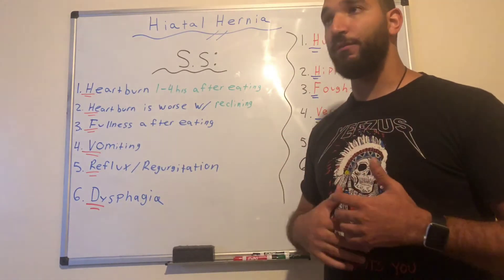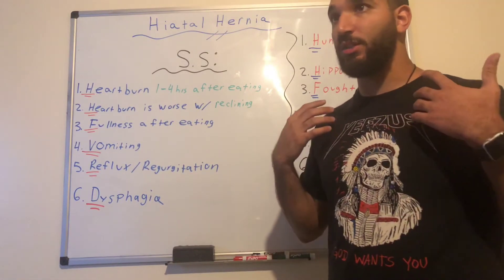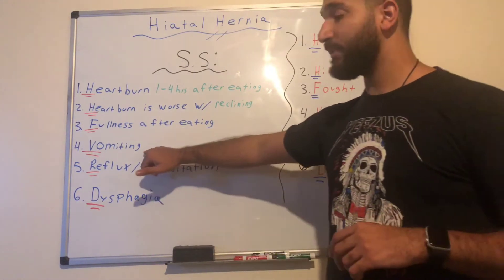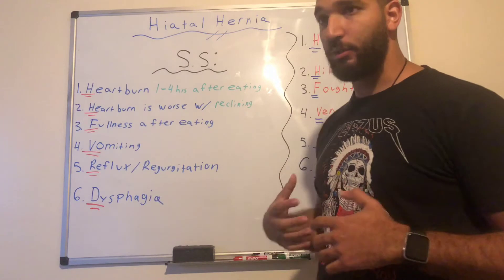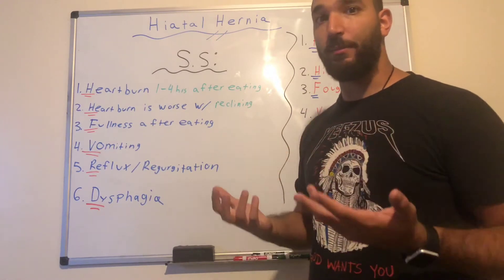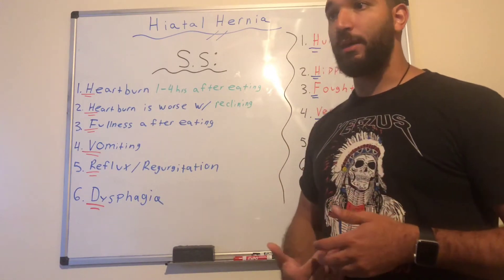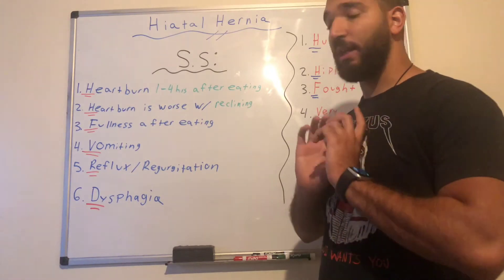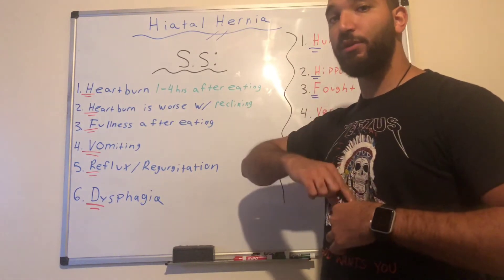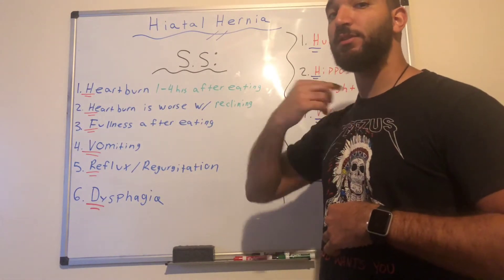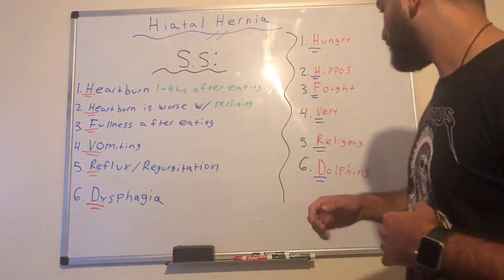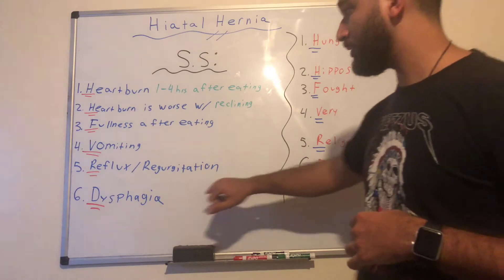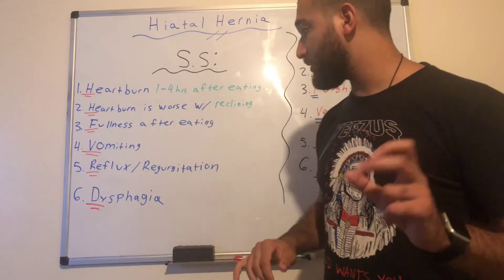The V in 'Very' stands for vomiting. The patient will experience vomiting due to increased abdominal pressure pushing content up through the lower esophageal sphincter, into the esophagus, and out of the oral cavity. The R in 'Religious' stands for reflux and regurgitation.